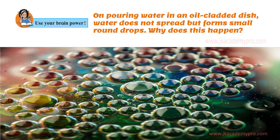Use your brain power. On pouring water in an oil-coated dish — a dish which has oil in it — water does not spread but forms small round drops. Why do you think this happens? Think about it. You can check your answers by visiting our site at www.jkacademypro.com.